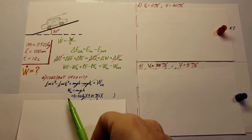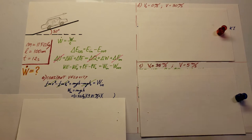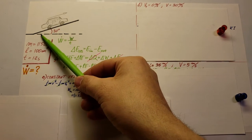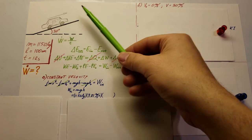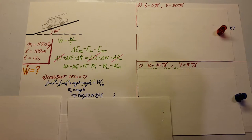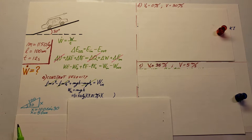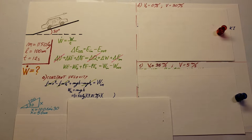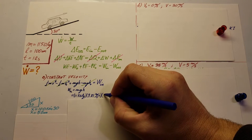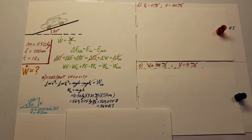Plugging in: mass is 1150 kg, gravity is 9.81 m/s². For height h, we use the right triangle — the slope is 100 m long at a 30-degree angle. Dropping a vertical line gives us a 30-60-90 triangle, so x = 100 × sin(30°) = 50 meters. The car is lifted 50 meters vertically.